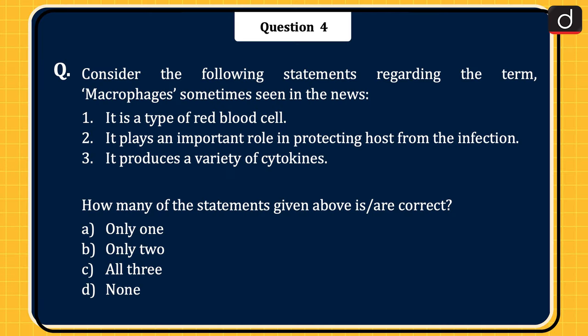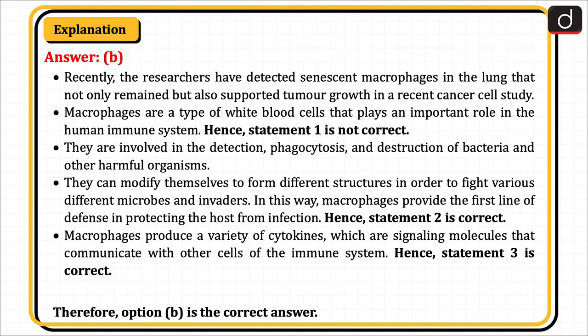The next question: consider the following statements regarding the term macrophages, sometimes seen in the news. Statement 1: it is a type of red blood cell. Statement 2: it plays an important role in protecting the host from infection. Statement 3: it produces a variety of cytokines. How many of the statements are correct? Only one, only two, all three, or none? The correct answer is option B, only two. Recently, researchers have detected senescent macrophages in the lung that not only remained but also supported tumor growth in a recent cancer cell study. Macrophages are a type of white blood cell that plays an important role in the human immune system. Hence, statement 1 is not correct.